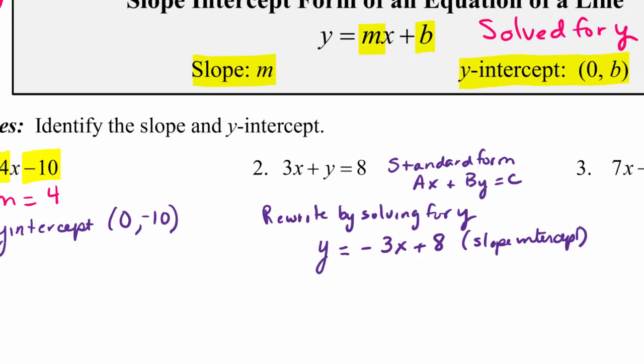So the slope will be the coefficient of x, so the slope is negative 3. And just a note here that sometimes students will write that the slope is 3x, but again, it's the number in front of the variable x that is the slope, so negative 3. And you know that corresponds to a negative 3 over 1, so that our rise over run, we've got that ratio there that we've been talking about for slope.